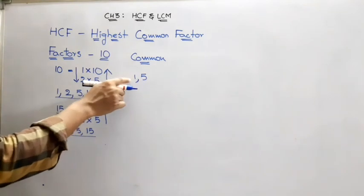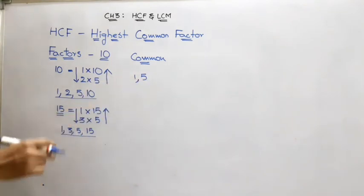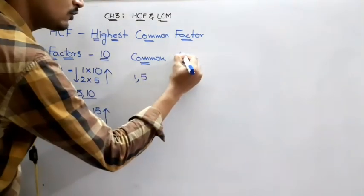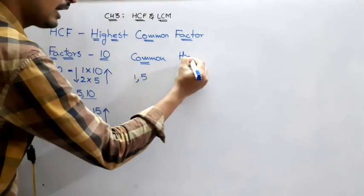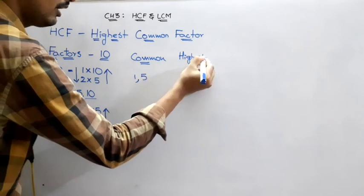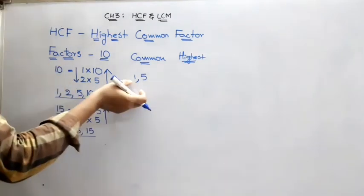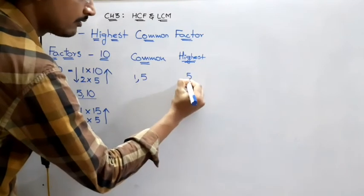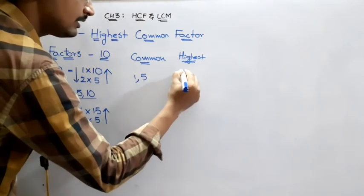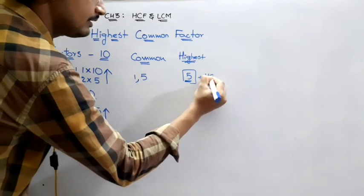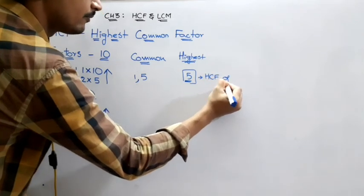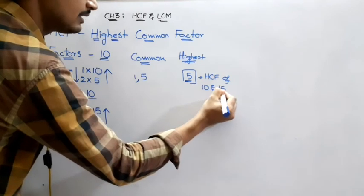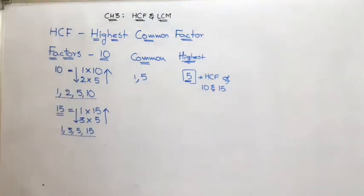The common factors of 10 and 15 are only 1 and 5. Now, of these common factors, which is the highest — meaning biggest or greatest? Of 1 and 5, which is the biggest? 5. So 5 is the HCF of 10 and 15.